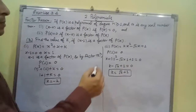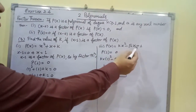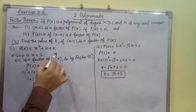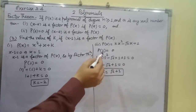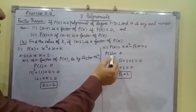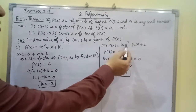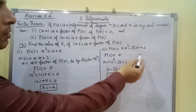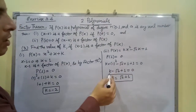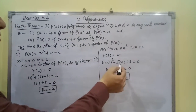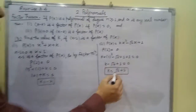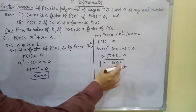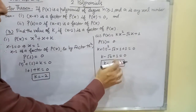For the third part, P(x) = kx² minus √2·x + 1. Again, since x minus 1 is a factor, P(1) = 0. Substituting x = 1: k(1)² minus √2(1) + 1 = 0, which gives k minus √2 plus 1 = 0, so k equals √2 minus 1.